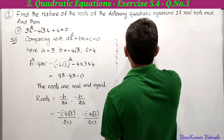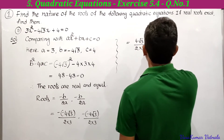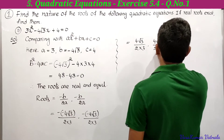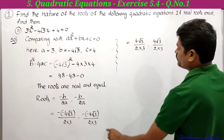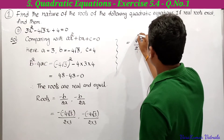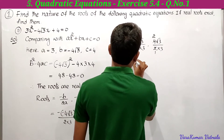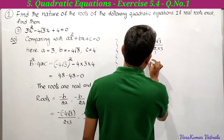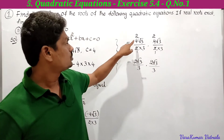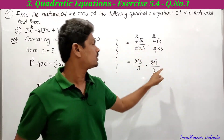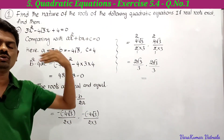Simplifying 4√3/6: we cancel 2 from numerator and denominator to get 2√3/3. So both roots are 2√3/3, 2√3/3. These are the roots of the given quadratic equation, and they are real and equal. That completes the second part.